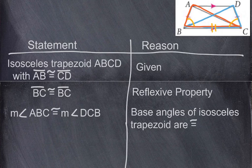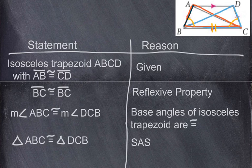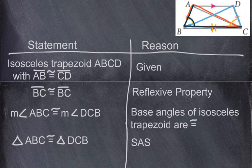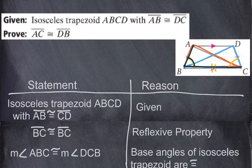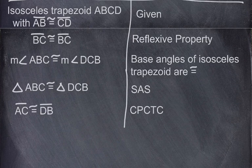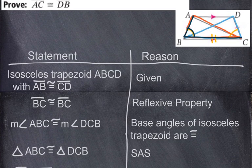Now we can say triangle ABC is congruent to triangle DCB by Side-Angle-Side: AB is a side, angle ABC is the angle, and BC is the other side — same for the other triangle. Since the two triangles are congruent, all their corresponding parts are congruent. We're trying to prove AC and DB are congruent. By CPCTC — corresponding parts of congruent triangles are congruent — AC is congruent to DB. We've proven the diagonals of an isosceles trapezoid are congruent.